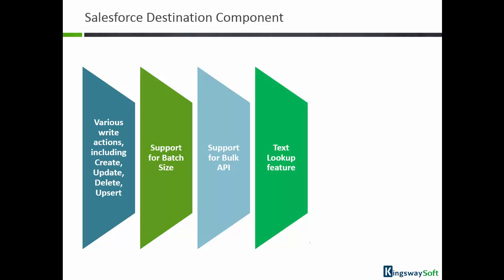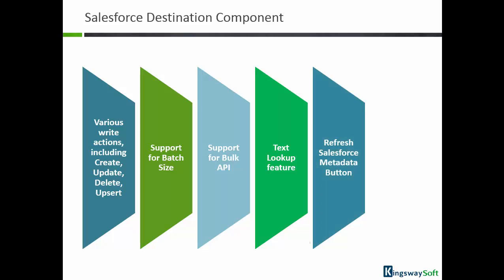Another unique feature we offer is Text Lookup, which is a feature that helps simplify your data flow. With this feature, you can use text values as the input of a lookup field so that the component will look up the record from the target Salesforce object using the text value. And whenever you have a metadata change on the Salesforce side, all you need to do is click one button and we'll take care of all the changes by updating the component to the latest Salesforce metadata. The toolkit can also save you time with our convenient feature that allows you to map any unmapped Salesforce fields.